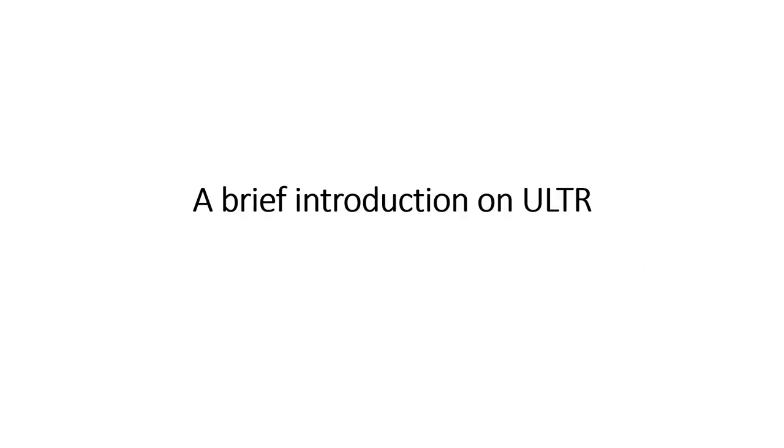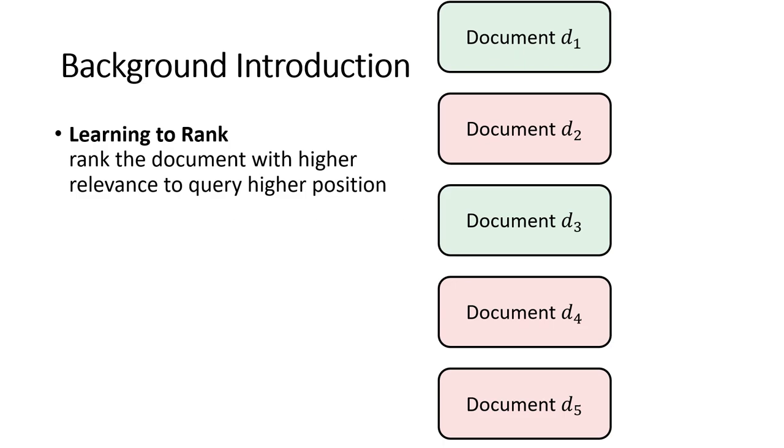First, let's give a brief introduction on the Unbiased Learning to Rank task. The Learning to Rank task frequently appears in web and search systems. Learning to Rank aims to rank documents with higher relevance to queries into higher positions. For example, the most relevant document should be put in the first place.